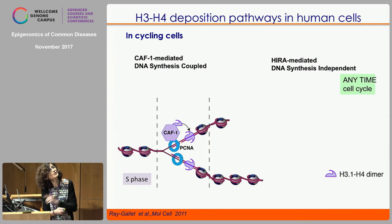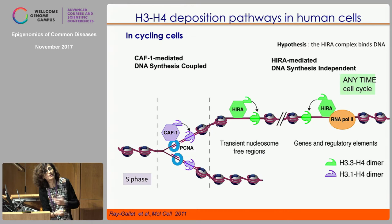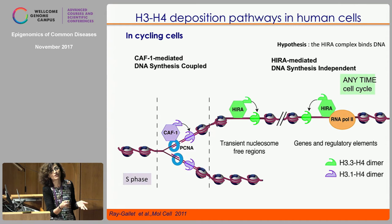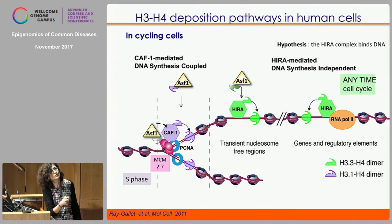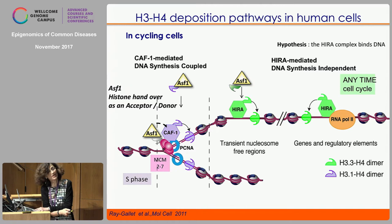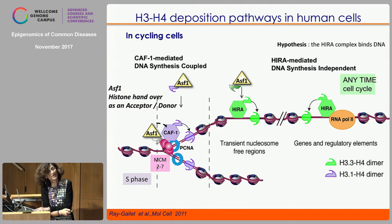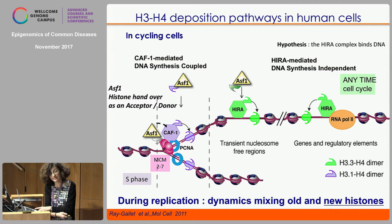To summarise histone deposition in cycling cells: during replication there is a CAF-1-mediated DNA synthesis-coupled deposition mainly for H3.1. For regions not properly assembled, HIRA can bring in H3.3, and there is also an interaction between HIRA and Pol II that can bring H3.3 to highly transcribed regions. The connection with potential recycling could involve ASF1, which can function as a handover to bring in new histones as an acceptor and donor. This scheme shows how during replication there is a mixing of old and new histones.